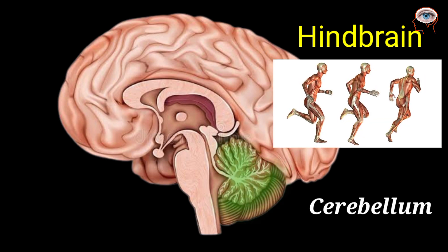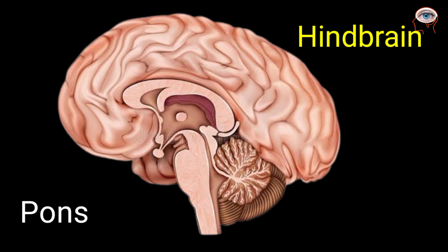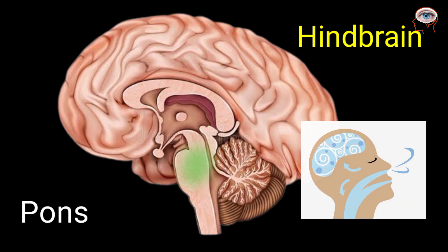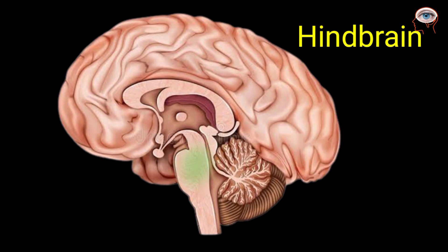The cerebellum is behind the medulla and coordinates muscle movements. The pons is present on the top of the medulla; it assists the medulla in controlling breathing and serves as a connection between the cerebellum and the spinal cord.